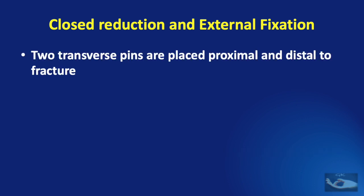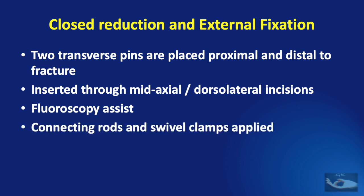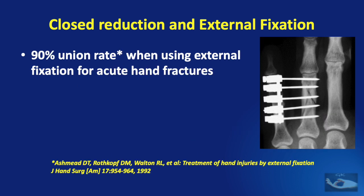The technique consists of applying two transverse pins placed proximal and distal to the fracture, inserted through mid-axial or dorsolateral incisions. Fluoroscopy assist will help in good alignment. Once the fracture has been completely reduced, connecting rods and swivel clamps are applied. Stability can be achieved with a single half frame; if necessary, another half frame may be added. Studies have shown that a 90% union rate has been achieved when using external fixation for acute hand fractures.